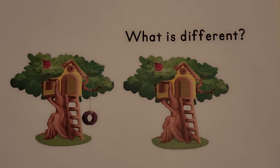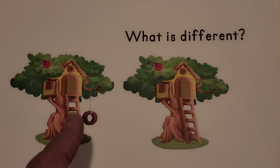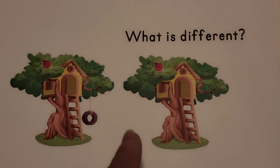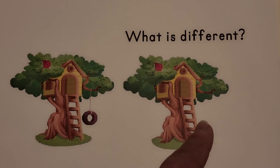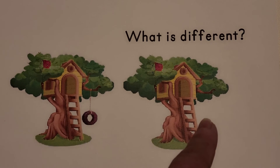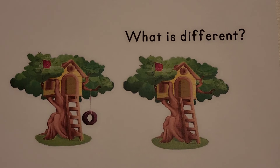I see a tree house. Can you see what is different about this picture than this picture? If you said the tire swing is missing, you're right — there's no tire swing in this picture. The missing tire swing is what is different.